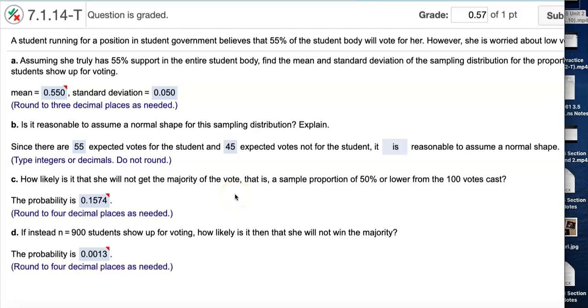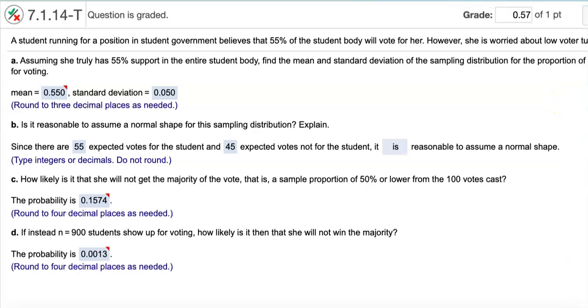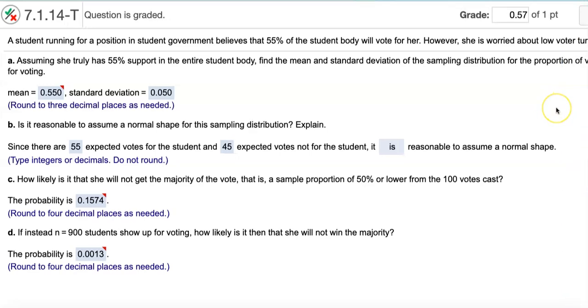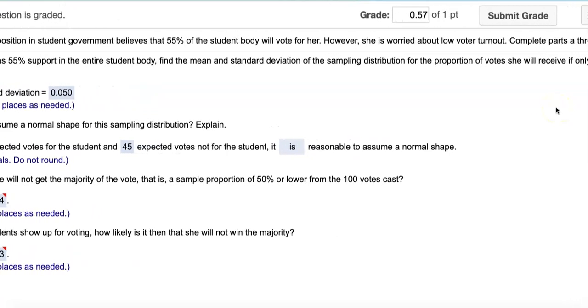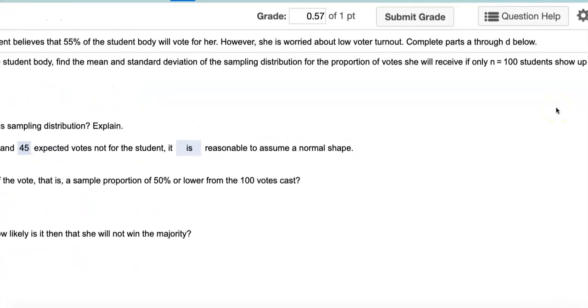This is for 7.1.14. It's a test bank item. A student running for a position in student government believes that 55% of student body will vote for her. However, she is worried about lower voter turnout. Complete parts A through D below.